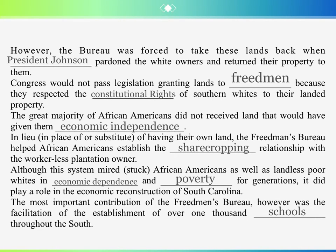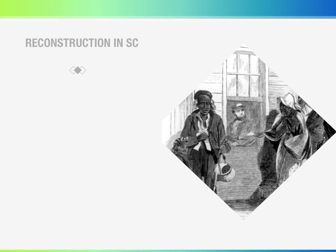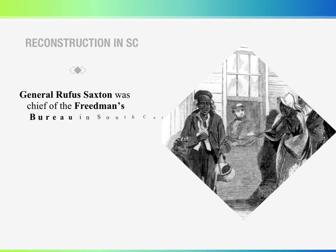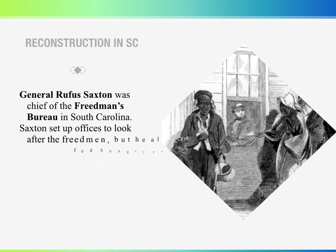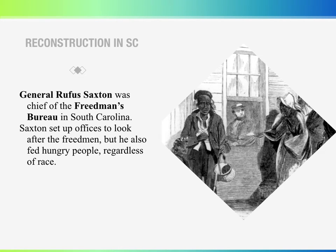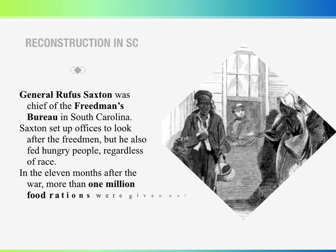The most important contribution of the Freedmen's Bureau, however, was the facilitation of the establishment of over 1,000 schools throughout the South. In South Carolina, General Rufus Saxton was the chief of the Freedmen's Bureau. Saxton set up offices to look after the Freedmen, but he also fed hungry people regardless of race. In the 11 months after the war, more than 1 million food rations were given out.